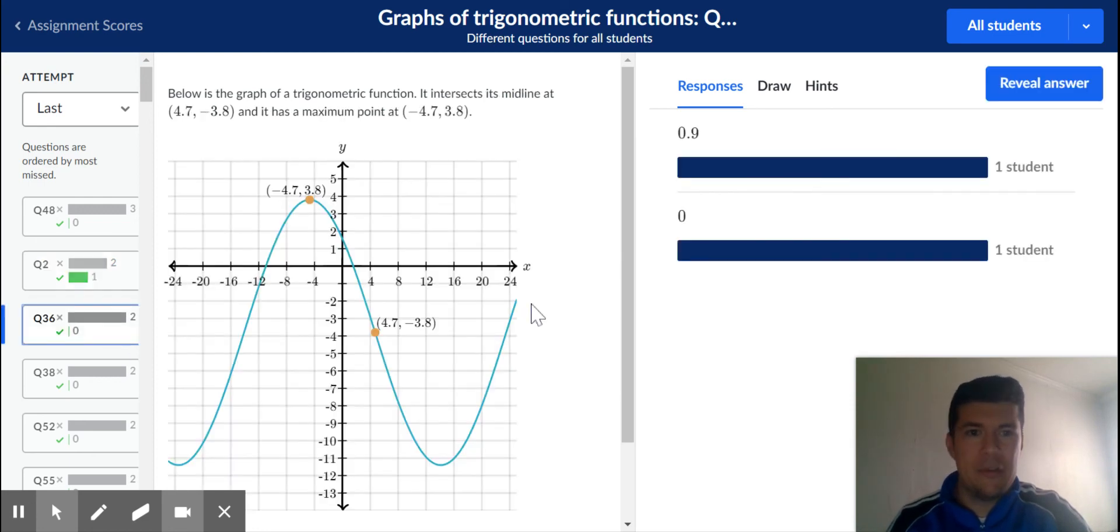So hopefully that helps. Not sure how much time we have left on the video. Here's another one. My X coordinate right here is negative 4.7, and here it's positive 4.7.